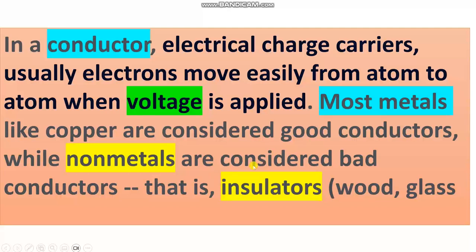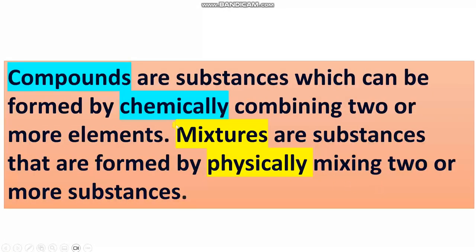What is the difference between compound and mixture? Look here. Compounds are substances which can be formed by chemically, take care here, chemically combining two or more elements. As an example, here in aviation, the aircraft uses aluminum alloy and steel.